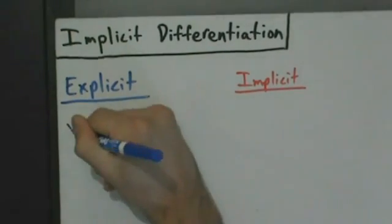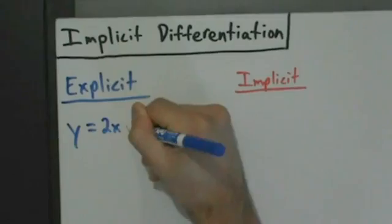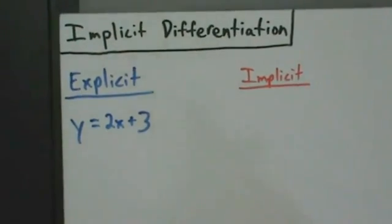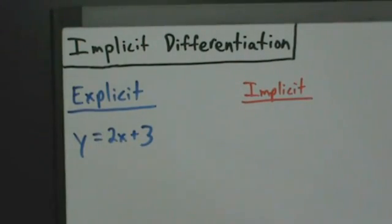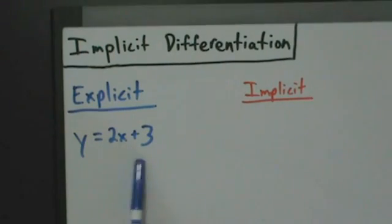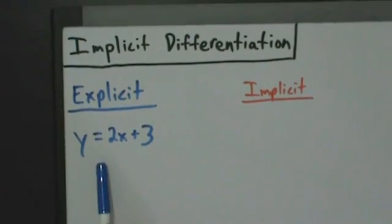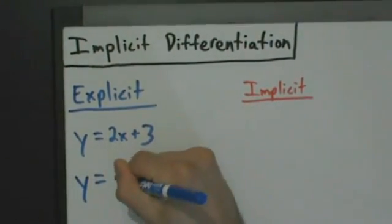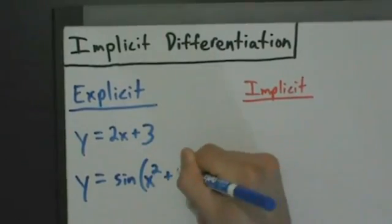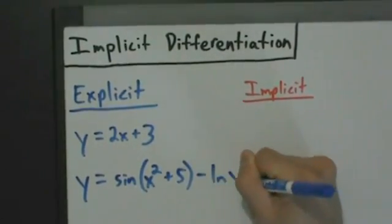Let's list a few examples. So y equals 2x plus 3 is an example of an explicit function because here y is expressed explicitly as a function of x. We have y by itself on one side of the equal sign, and everything else on the other side just has x's and numbers. Another slightly more complicated example is y equals the sine of x squared plus 5 minus the natural log of x.